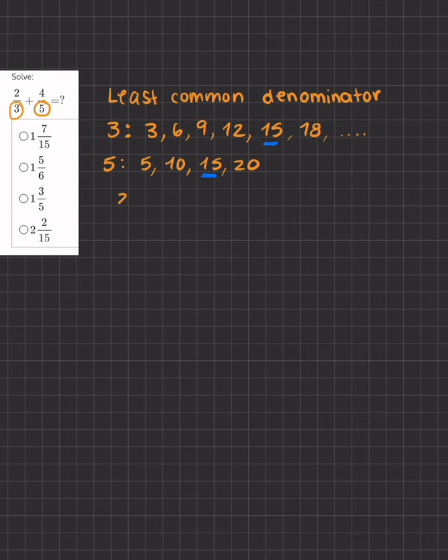Now, we'll take our first fraction, 2/3. Now to convert it to have a common denominator of 15, what did I have to do? I basically just multiply this by 5. Now if I multiply the denominator by 5, I'll also have to multiply the numerator by 5, giving me 10.